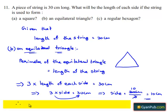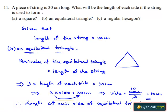Therefore, the length of each side of the equilateral triangle is equal to 10 cm.